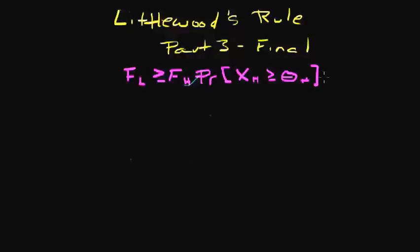If the expected value of the higher fare customer was greater than $100, he would save the seat. If the expected value was less than $100, he would take the $100 with certainty.